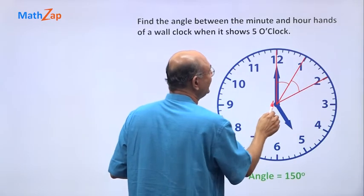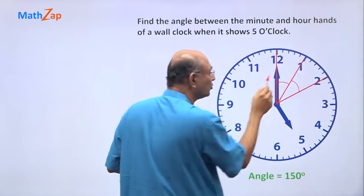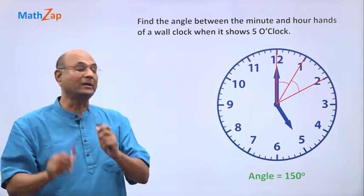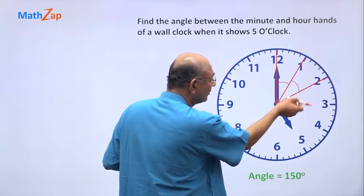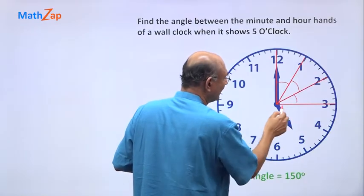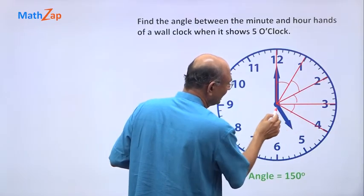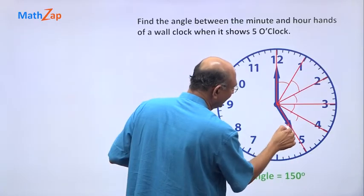Both of these are equal. You can just see 12 to 1, 1 to 2, the angles are equal. And then similarly, I can draw one more small part here, one more small part here, and one more small part here.